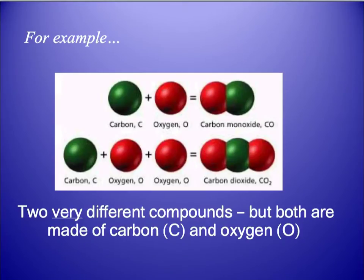Here's one more example of a compound. Carbon (shown in green) and oxygen (shown in red) can come together to make carbon monoxide, or if you have one carbon and two oxygens, that makes carbon dioxide. Carbon monoxide is poisonous, while carbon dioxide is totally fine — it's what we breathe out and it's in the air around us.